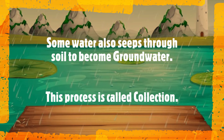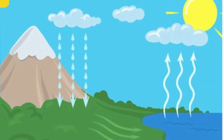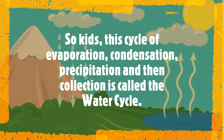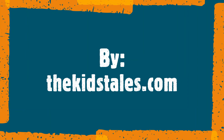Some water also seeps through the soil to become groundwater. This process is called collection. So kids, this cycle of evaporation, condensation, precipitation, and then collection is called the water cycle. I hope you have understood something more about the water cycle.